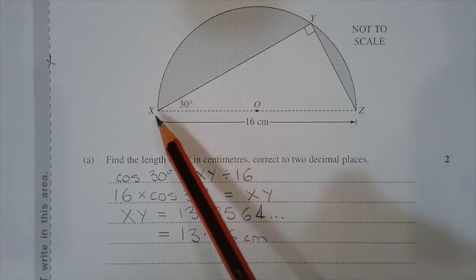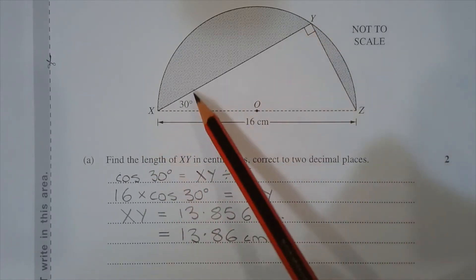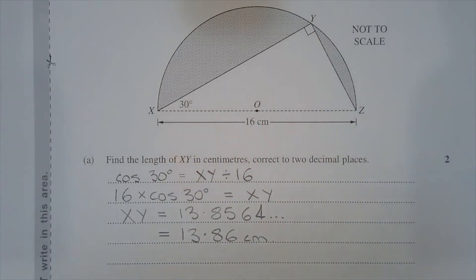In right angle triangle XYZ, XY is the adjacent side to angle theta and XZ is the hypotenuse. Using right angle trigonometry, that means cos of 30 degrees is equal to XY divided by 16. That's adjacent over the hypotenuse.